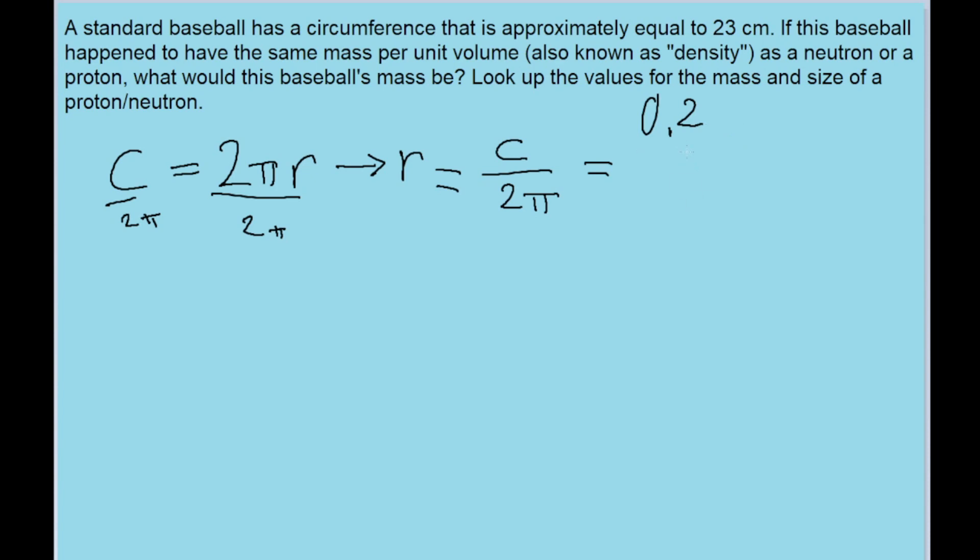So if you're given an amount in centimeters and you want to convert it into meters, just take it and multiply it by 10 to the power of negative 2. So that's 0.23 meters divided by 2π. And we can see that the radius of the baseball is equal to 0.0366 meters. And then there are probably some more decimal places in your calculator, so hold on to them.